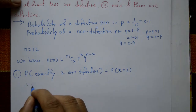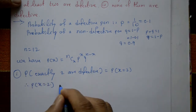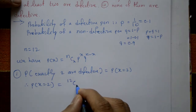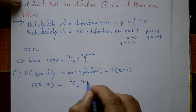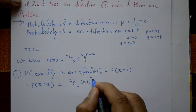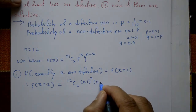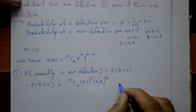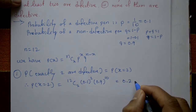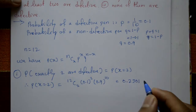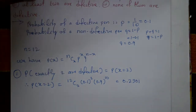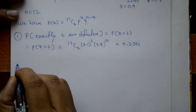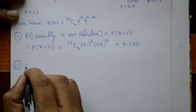Therefore P(X = 2) = 12C2 × (0.1)^2 × (0.9)^(12−2) = 12C2 × (0.1)^2 × (0.9)^10. Using a calculator, you get 0.2301.